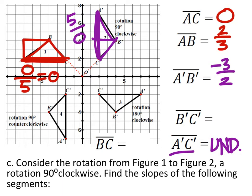What this means is that whenever you rotate something 90 degrees, these slopes will be opposite reciprocals of each other. So when we look at BC — slope of down two to the right two, which is negative one — B prime C prime should have a slope of positive one. Let's check: up two to the right two simplifies to one. Our prediction is correct.